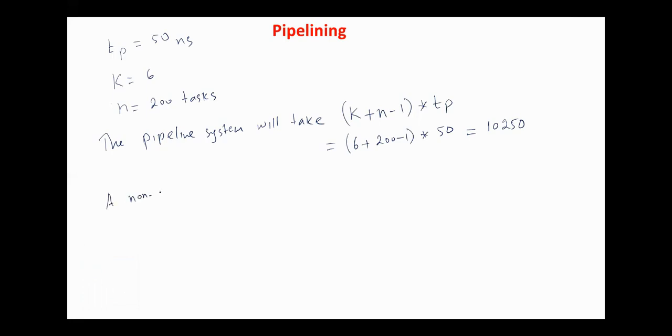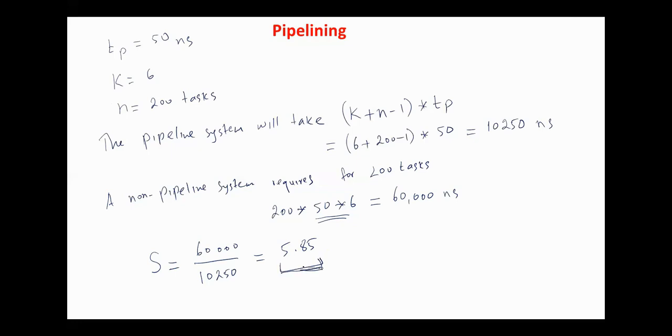While a non-pipeline system requires for 200 tasks, if we assume that the time in all segments is equal, 60,000 nanoseconds. In this case, the speed up ratio equals 60,000 over 10,250, which is about 5.85. The result always here should be less than K. As N increases, we approach to K.